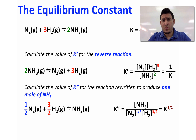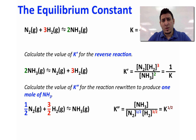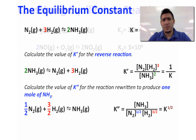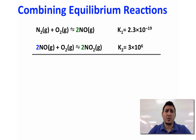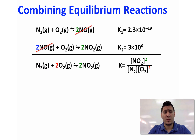This means that if you multiply a reaction by an integer N, the new equilibrium constant will be K to the power N. Now, what happens if you want to find the equilibrium constant for the overall reaction of two steps? If we sum these two steps, we get N₂ + 2O₂ → 2NO₂.